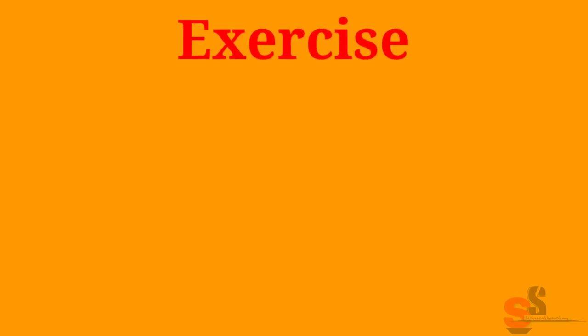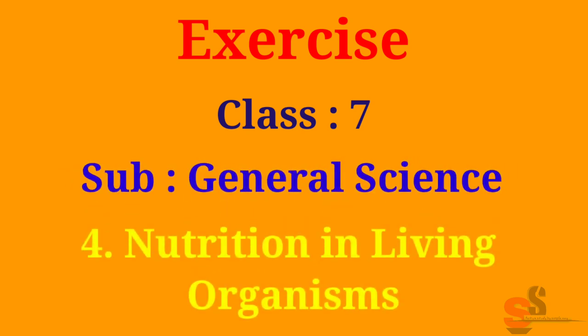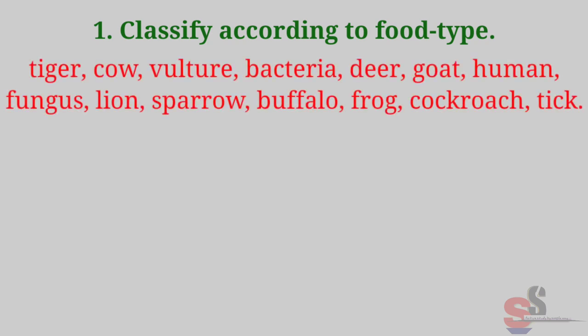Exercise Class 7, Subject: General Science, Chapter 4: Nutrition in Living Organisms. Question 1: Classify according to food type — Tiger, Cow, Vulture, Bacteria, Deer, Goat, Human, Fungus, Lion, Sparrow, Buffalo, Frog, Cockroach, Tick.